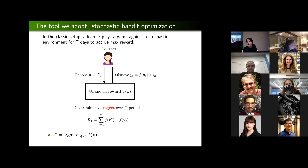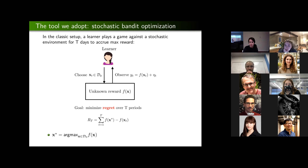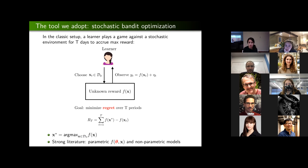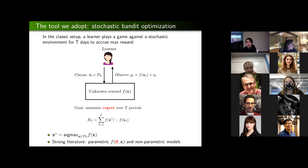Each day the learner chooses an action x_t and observes a noise-perturbed version of f(x_t). Her goal is to minimize her regret of not knowing f(x) over T periods. Regret is defined as the difference between the maximum possible reward — given by the maximizer x* of the unknown function f(x) — minus f(x_t), the actions chosen by the learner, in expectation. There's a strong literature on this topic with results for both parametric forms, where all uncertainty in f is characterized by an unknown parameter vector theta, and also non-parametric models.